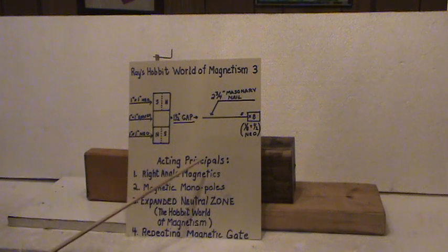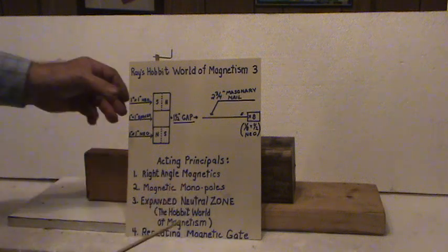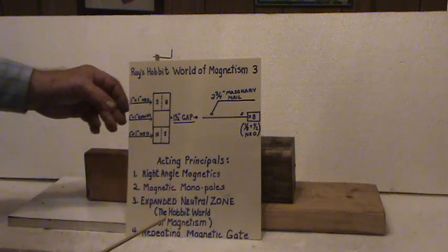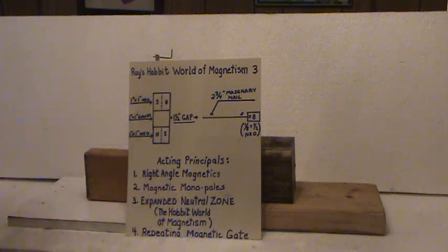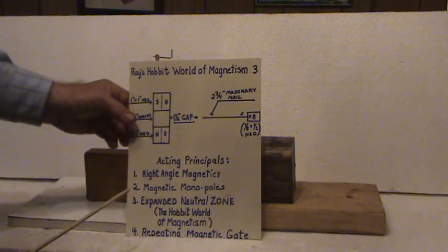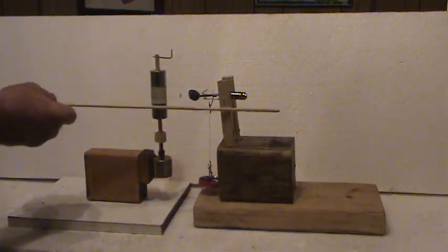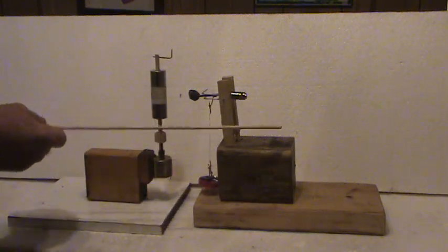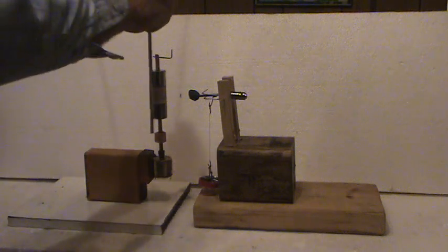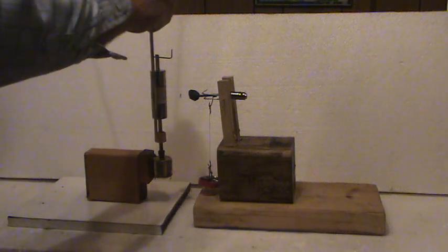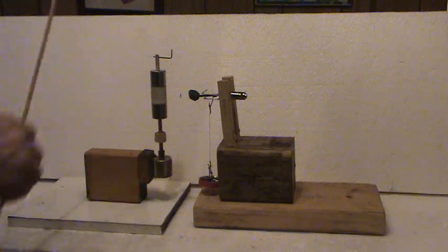The acting principles. The right-hand or right-angle magnetics. And you can go back to number one. Ray's Hobbit world of magnetism one. And watch that. It'll explain that a little bit better. But you can see that this force field, the output, is at right angles to the input. And there's some special effects that take place when that happens.